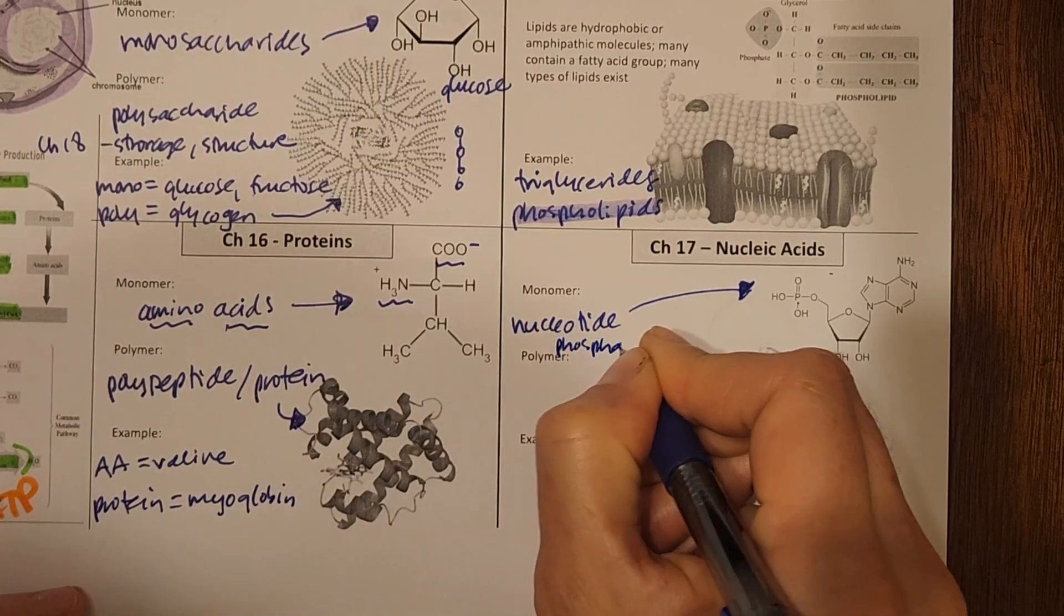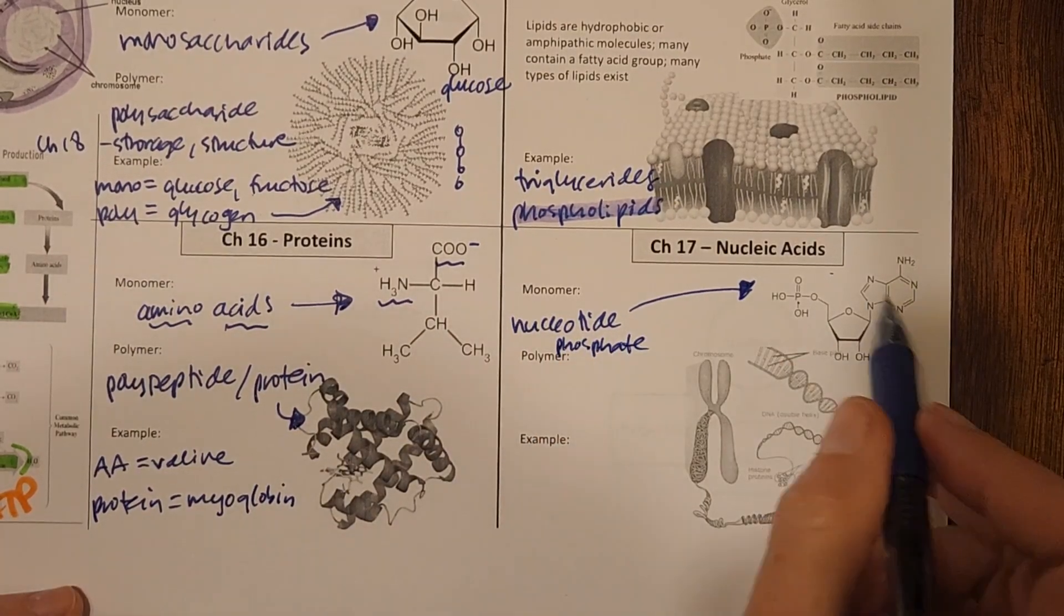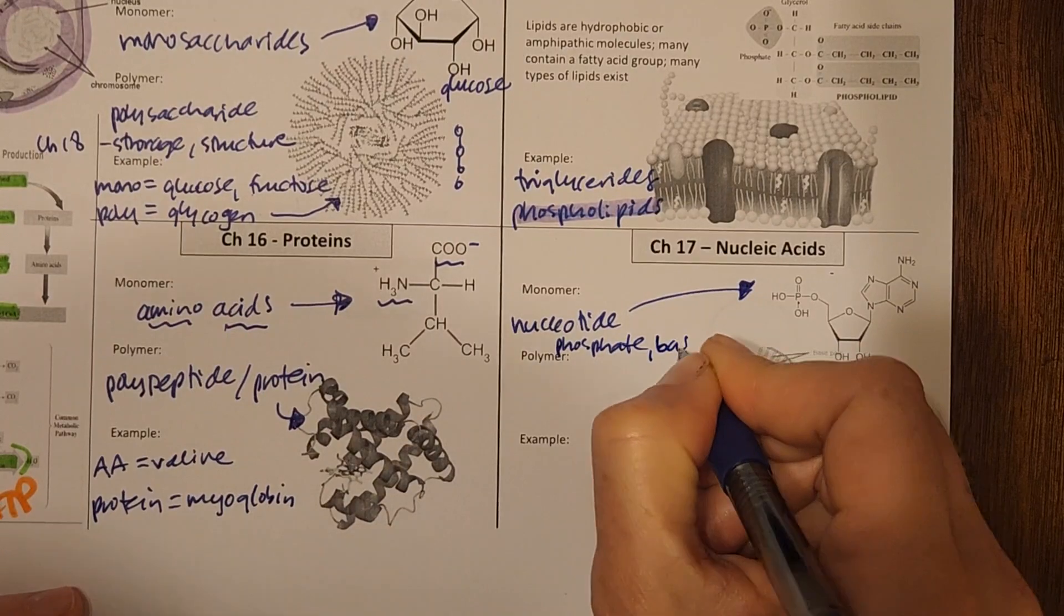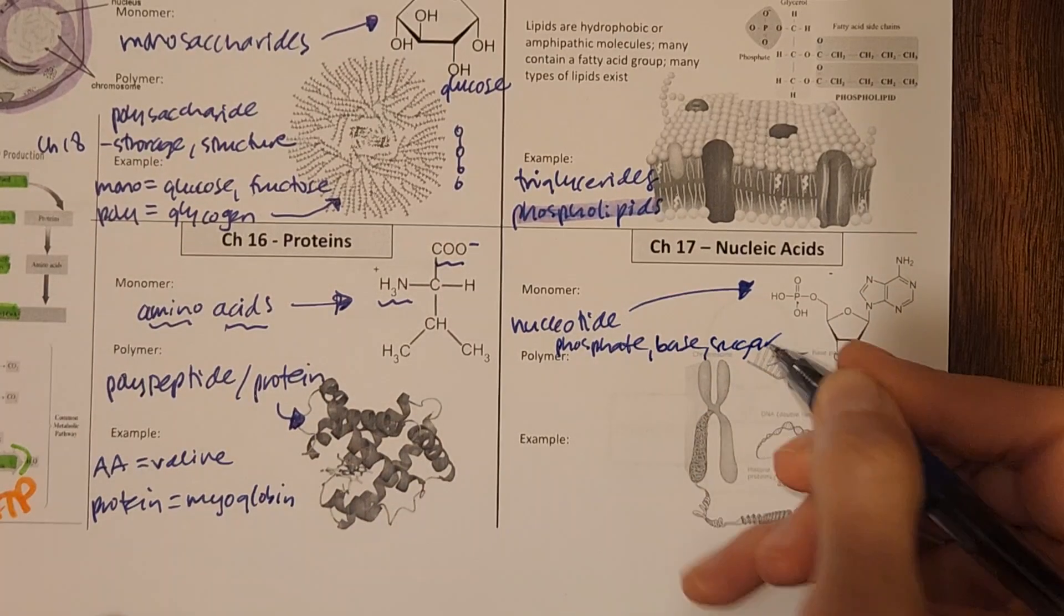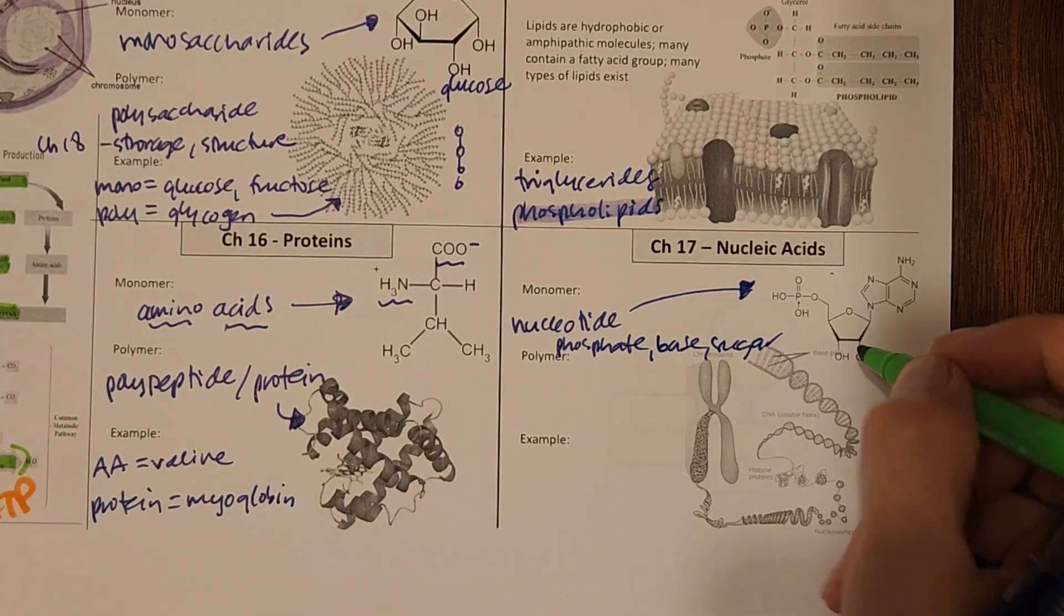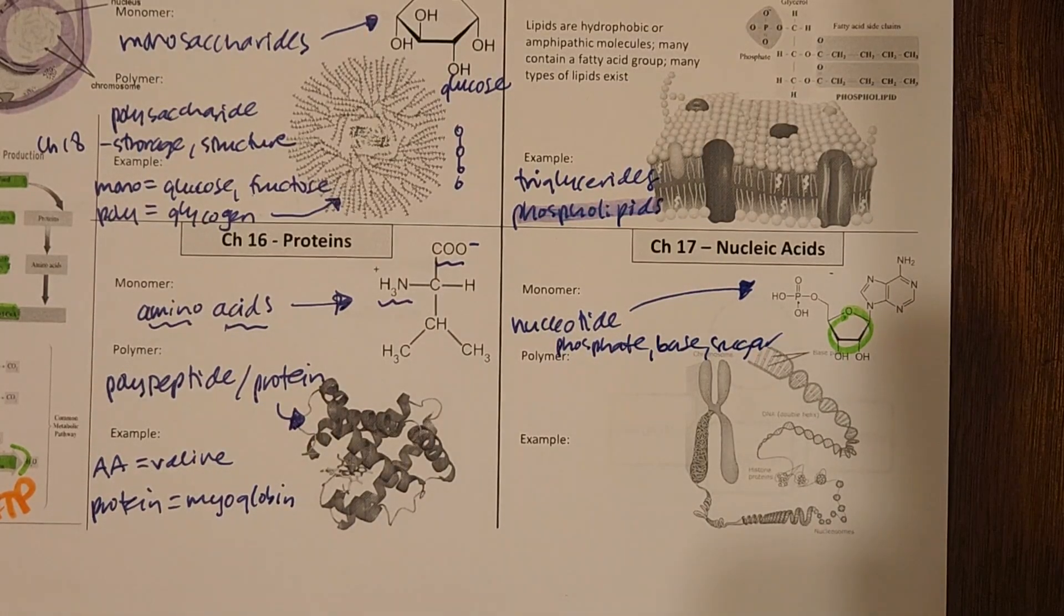So it's made of a phosphate, a base with lots of nitrogens in it, and a sugar, which is what we're learning in this chapter. So we're going to see those carbs show up down here as well.